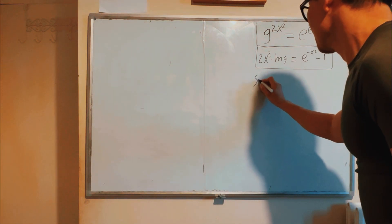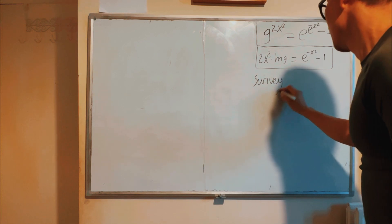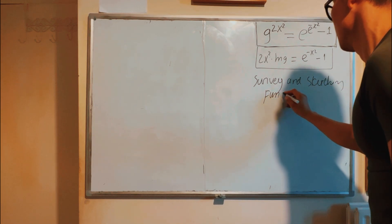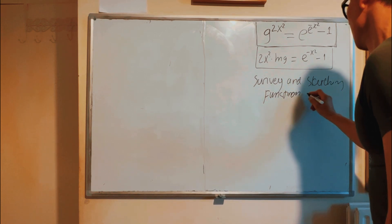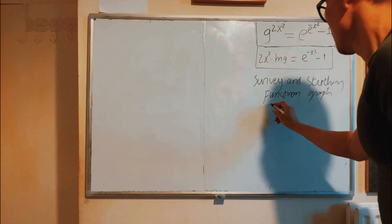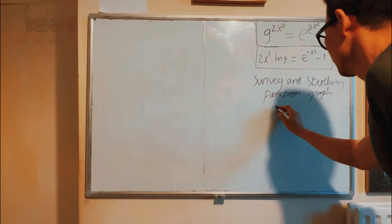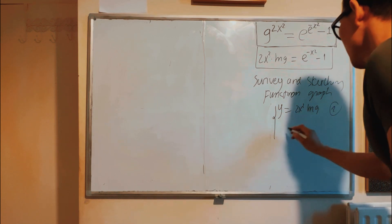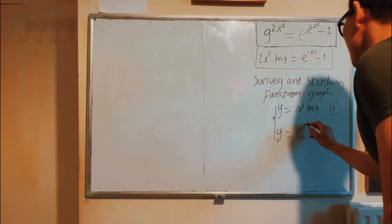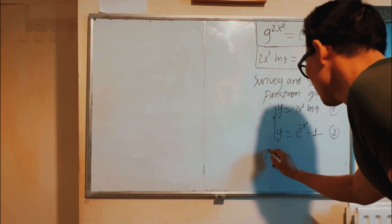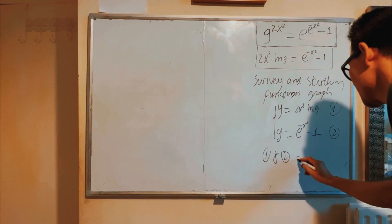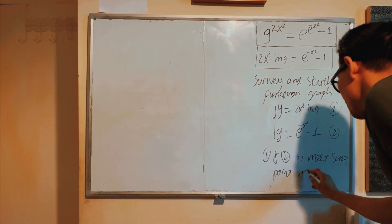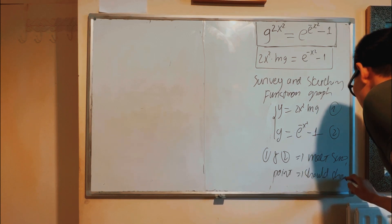Now you do survey and sketching function graph. Left hand side y equals 2x² ln 9, right hand side e^(x²) - 1. If 1 and 2 intersect, that will be somewhere. That should show you on the graph.